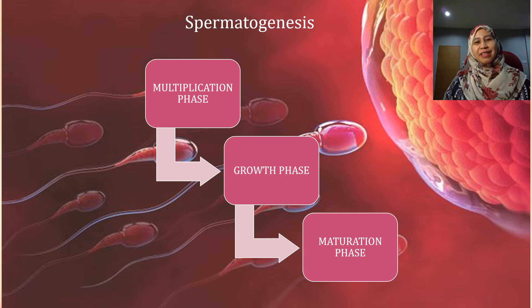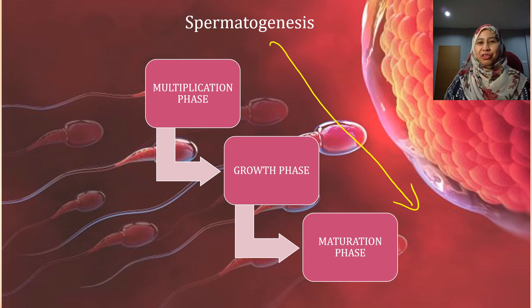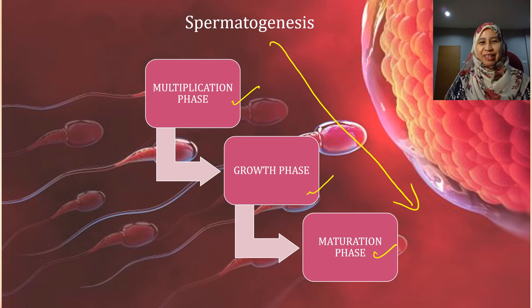Spermatogenesis can be divided into three phases, and the diagram shows the sequence. It starts with the multiplication phase, followed by the growth phase, and the last one is the maturation phase.